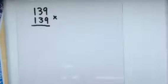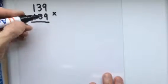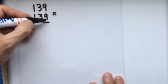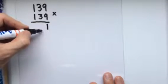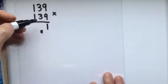I'm going to multiply 139 by 139. First of all, I'm going to multiply by the 9. 9 times 9 is 81. I'm going to mark a small 8 down there as a note.